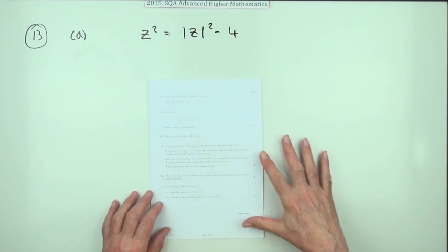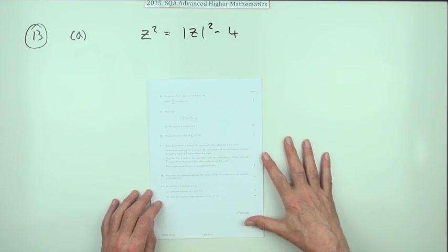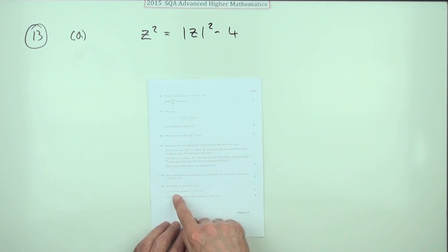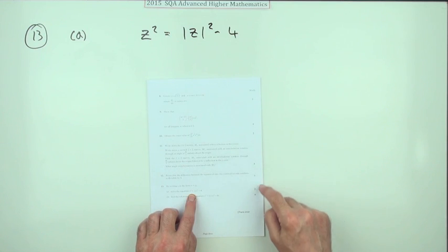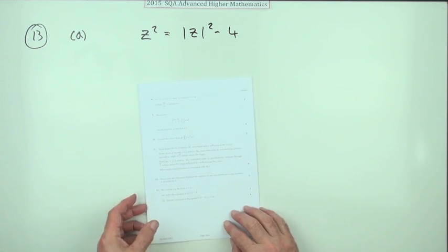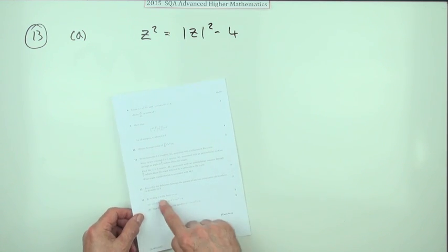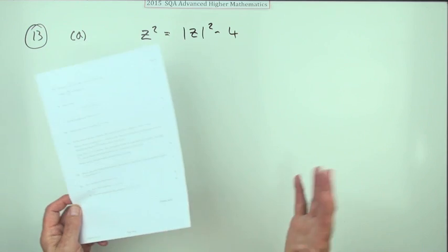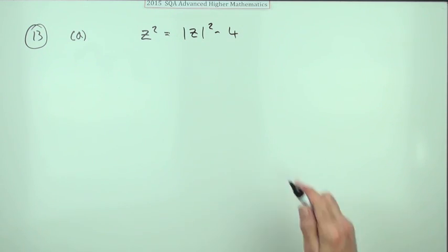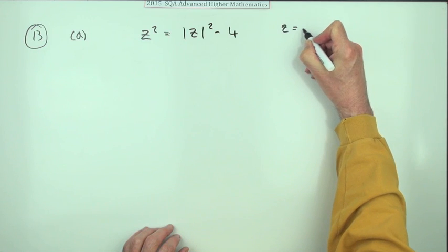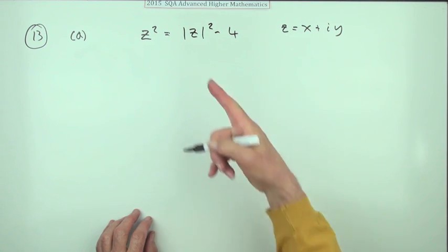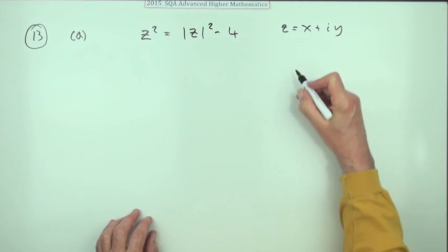Number 13 from the 2015 Advanced Higher Maths — a complex number question. The equation involves complex numbers. The first part says solve this equation for three marks, and it says by writing z in the form x plus iy, which you would have done anyway. So just put a note of that: z equals x plus iy.